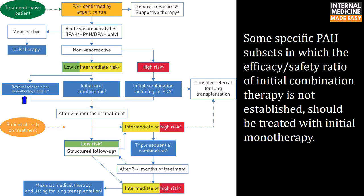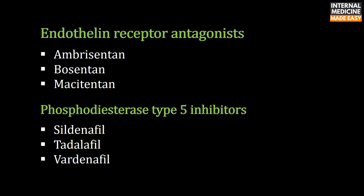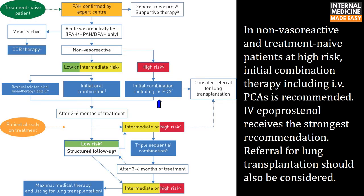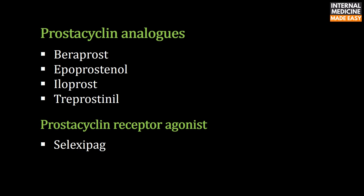Some specific PAH conditions where the efficacy-safety ratio of initial combination therapy is not established should be treated with initial monotherapy. Endothelin receptor antagonists include ambrisentan, bosentan, and macitentan. PDE-5 inhibitors include sildenafil, tadalafil, and vardenafil. In non-vasoreactive treatment-naive patients at high risk, initial combination therapy including IV prostacyclin analogues is recommended; IV epoprostenol received the strongest recommendation. Referral for lung transplantation should also be considered. Prostacyclin analogues include beraprost, epoprostenol, iloprost, and treprostinil. The prostacyclin receptor agonist selexipag is also available.